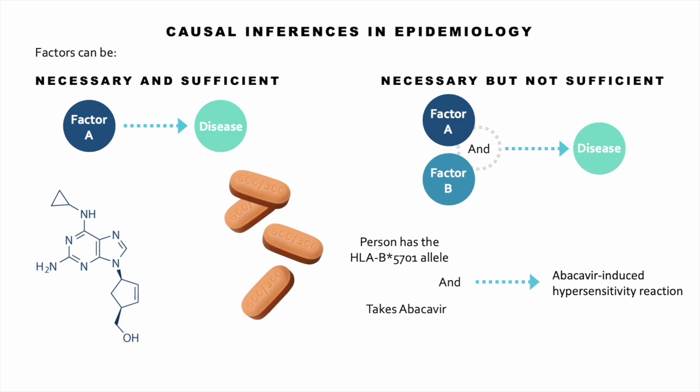If someone takes abacavir who has the HLA-B*5701 allele, they can have a severe allergic reaction, which can be life-threatening. Such a reaction usually occurs within the first six weeks of taking antiretroviral therapy containing abacavir and may cause a skin rash, fever, malaise, gastrointestinal symptoms, respiratory symptoms, and can lead to Stevens-Johnson syndrome or systemic lupus erythematosus. Five to eight percent of the population has the HLA-B*5701 allele, so we have to screen everyone for it before prescribing abacavir, using a simple blood test.